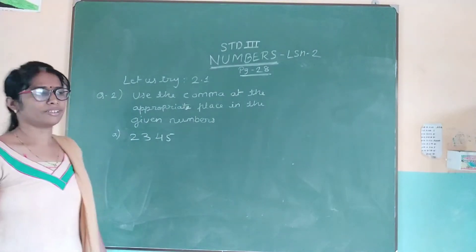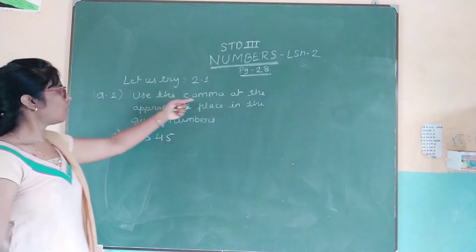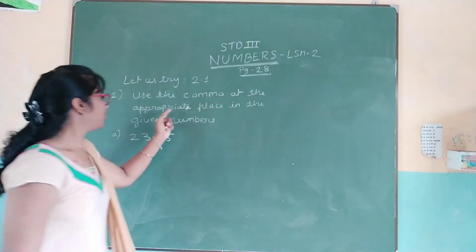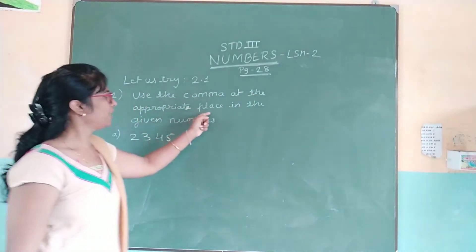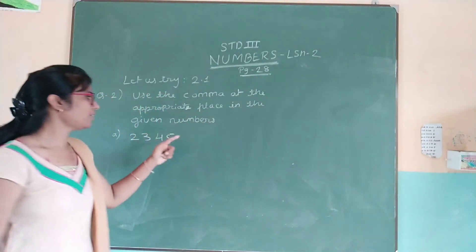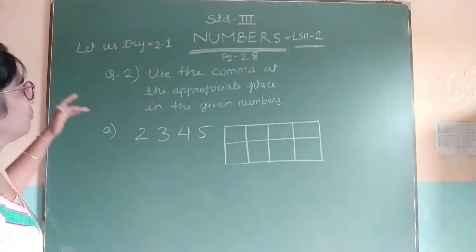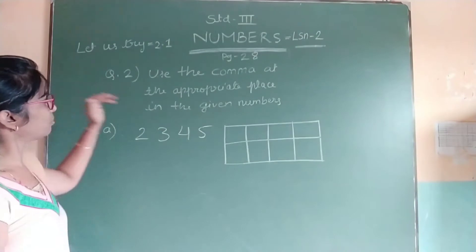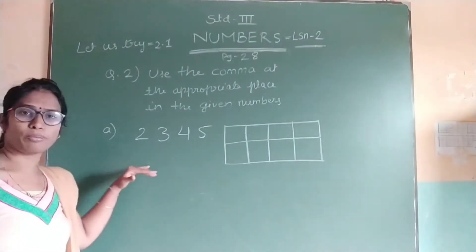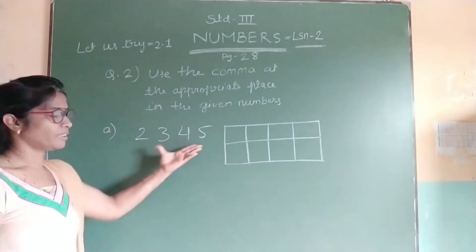Now let us read question number 2: use the comma at the appropriate place in the given numbers. So now we are supposed to insert a comma in this number.